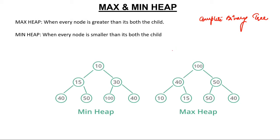So what is min heap? When any node you pick is lesser than both its children, that is a min heap. For example, if you see 10, it is less than both its children. If you pick 30, it is less than both its children. If you pick 15, it is less than both its children — this is called min heap. Make sure it's not a BST; it's simply a min heap.